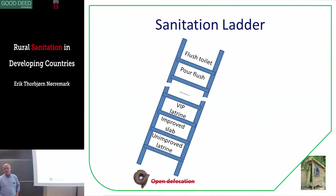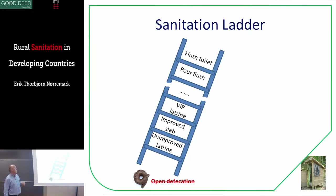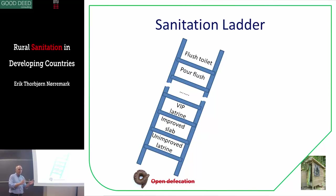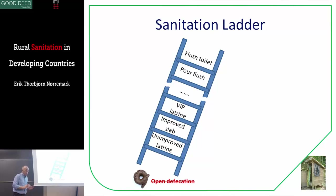We have something called the sanitation ladder, where we start at the bottom with open defecation — which we want to eliminate. It's called a ladder because you step up and get improved quality at every step. For example: unimproved latrine, then improved slab, VIP latrine, something else, pour flush, and finally flush toilets like we have at DTU. The ladder can look different depending on the project area, as some building technologies are more suited to certain contexts — based on culture as well. You should not introduce a technology that is against people's culture; if people want to use water, they need a solution that uses water.